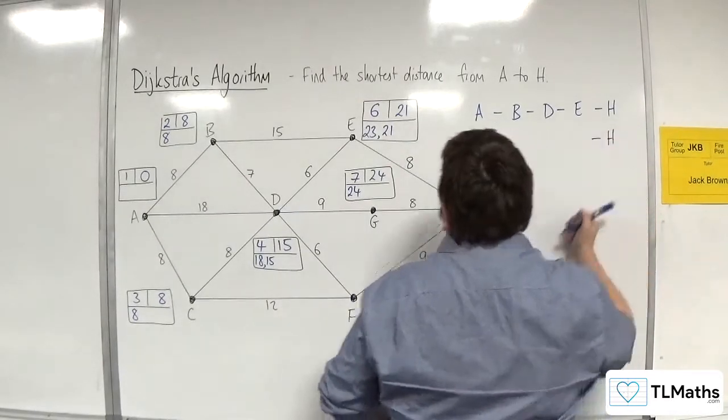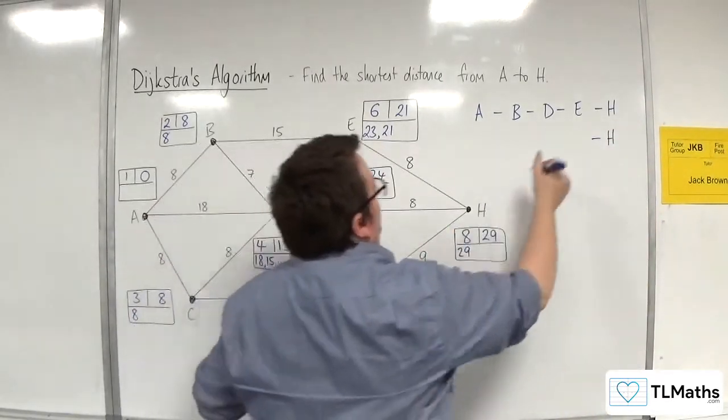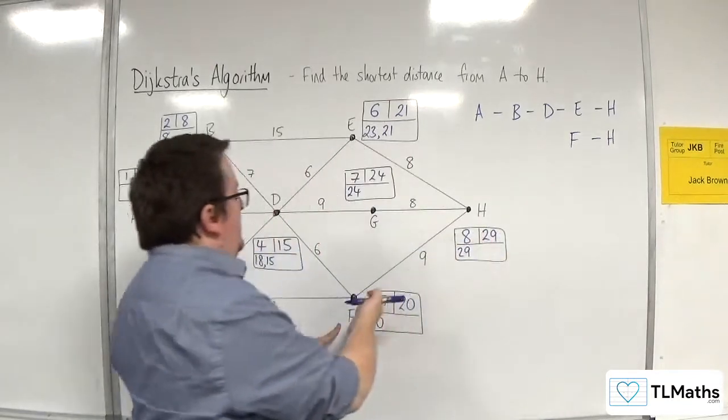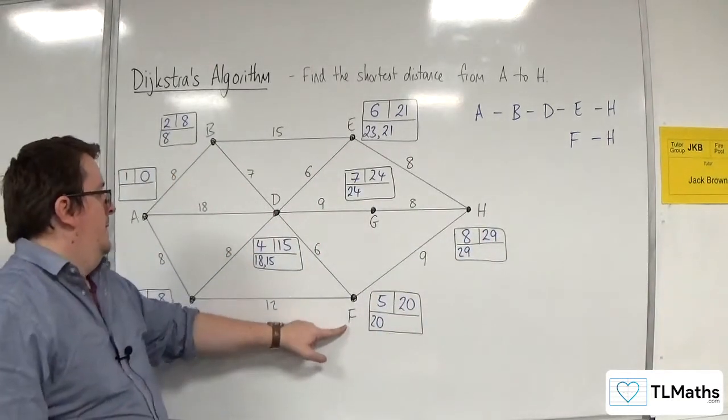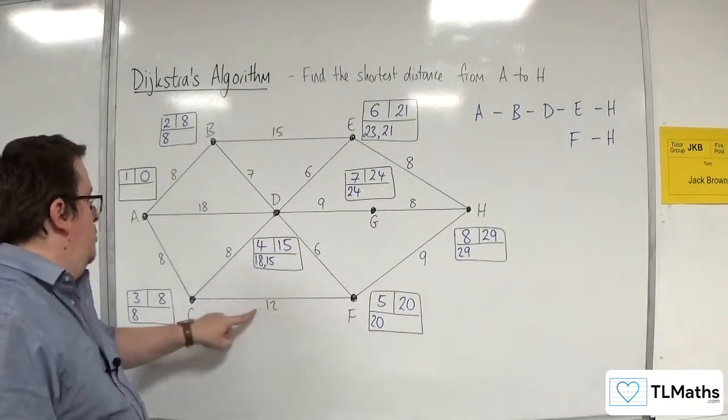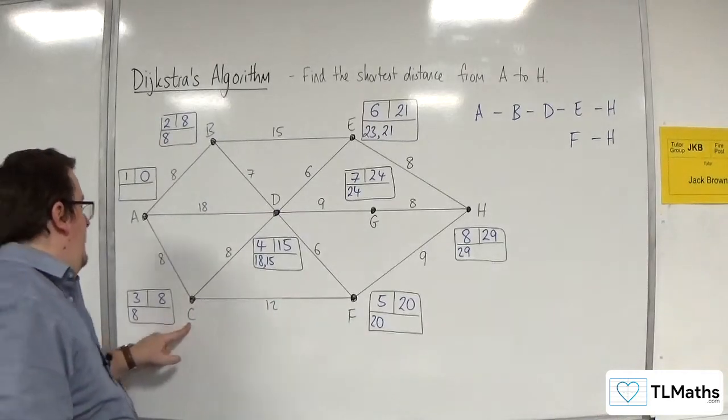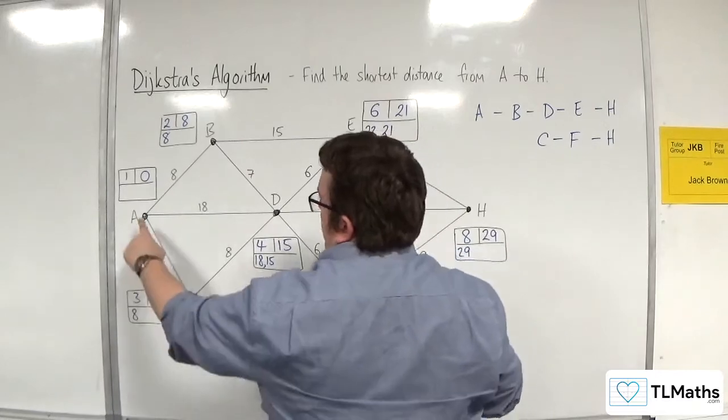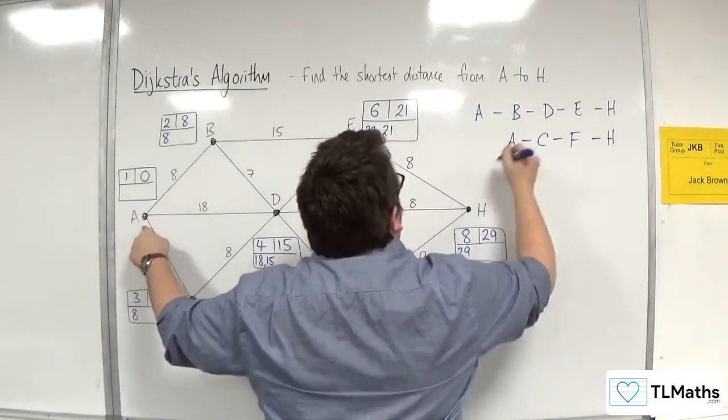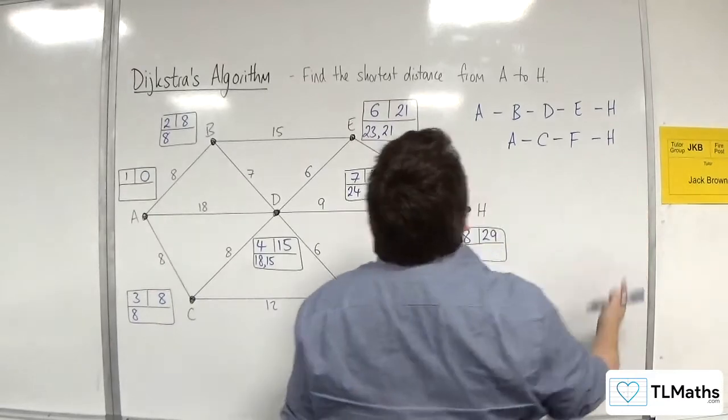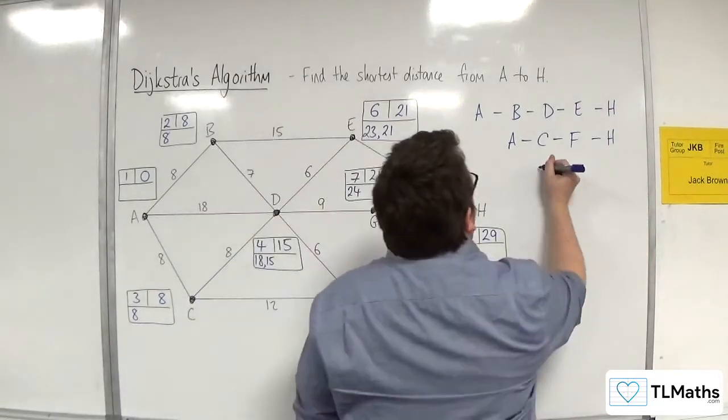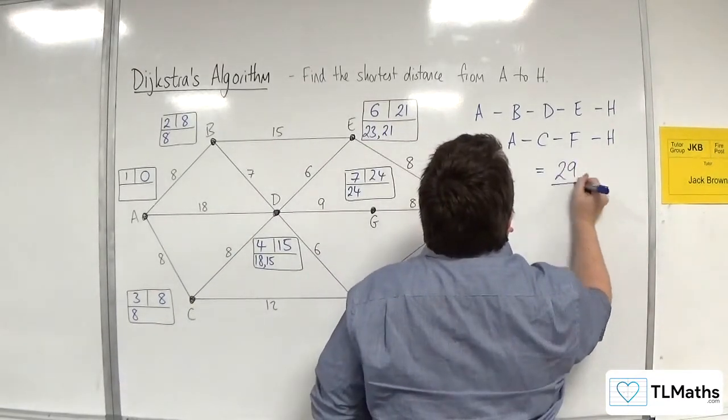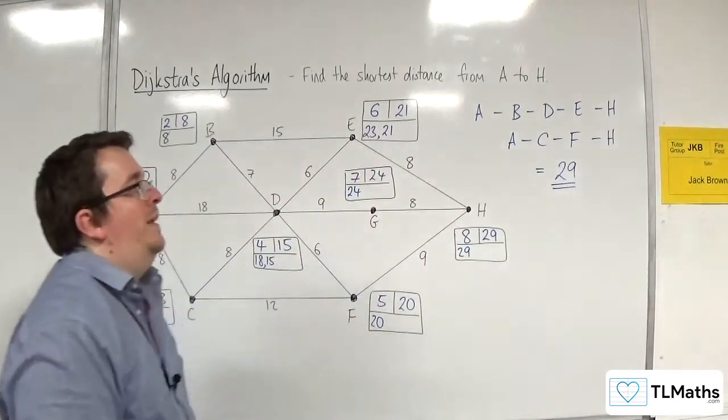Or from H we go back to F, so 29 take away 9 is 20. Then 20 take away 12 gets us to 8, so C. And then 8 take away 8 gets us back to A. So there are two possible routes through the system, both of which give us a shortest distance of 29.